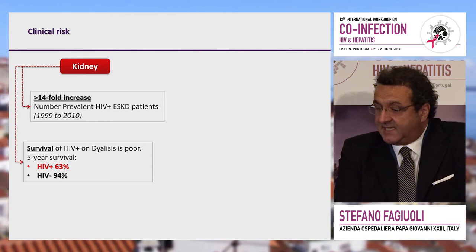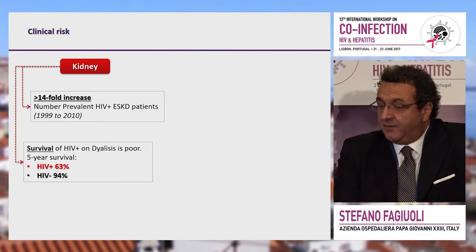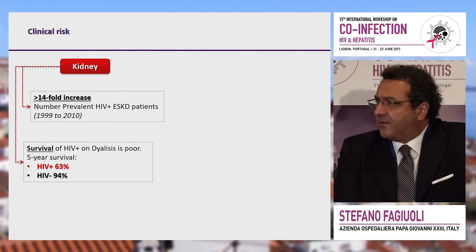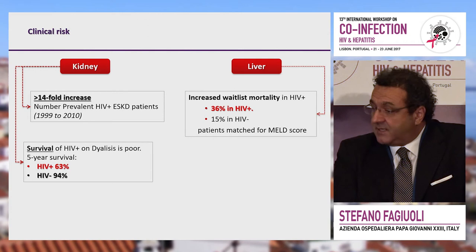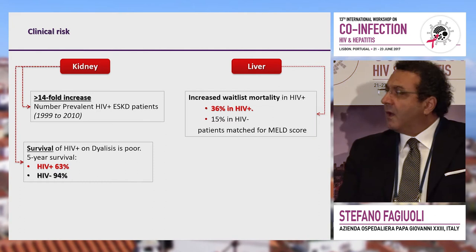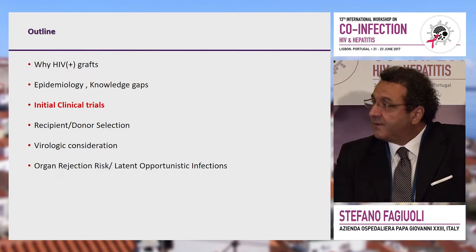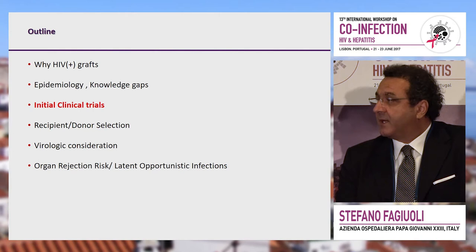HIV-positive patients with kidney disease have a 14-fold increased risk of worsening their condition, and prevalence of renal problems among HIV-positive individuals has increased from the 1990s to 2010. Five-year survival on dialysis is much lower if co-infected. For those with liver disease, waitlist mortality is as high as 36% compared to an average of 10 to 15%. These patients are at serious clinical risk, and we need to accelerate their access to transplantation.